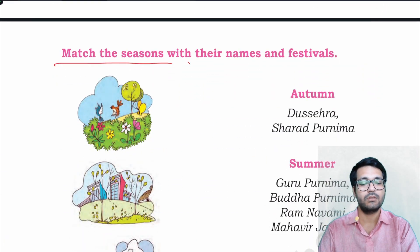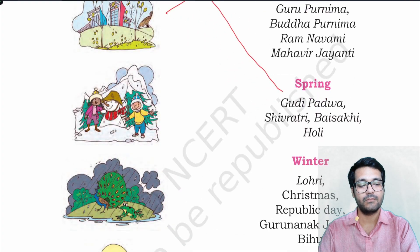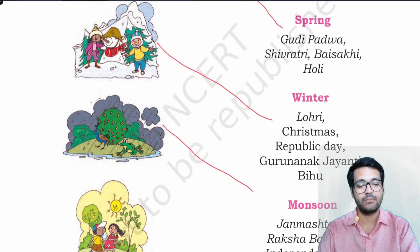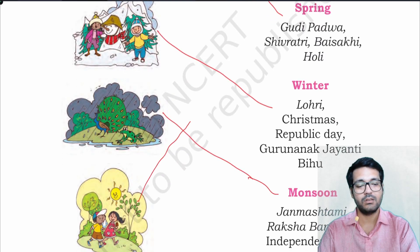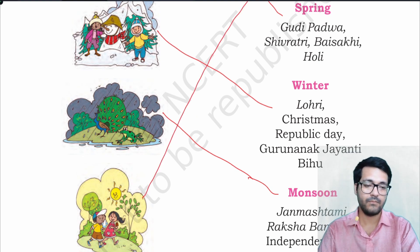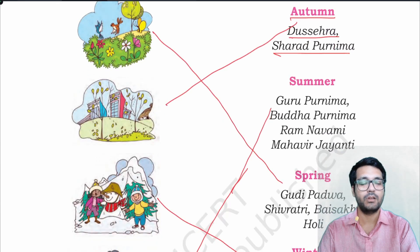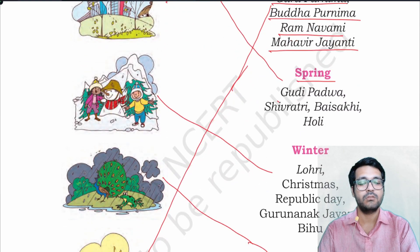Match the seasons with their names and festivals. This is spring season, this is autumn season, this is winter season, this is rainy season or monsoon season, and this is summer season. During autumn season you see festivals like Dussehra, Sharad Purnima and Diwali. During summer season you see Gudi Padwa, Shivaratri, Baisakhi, and Holi.